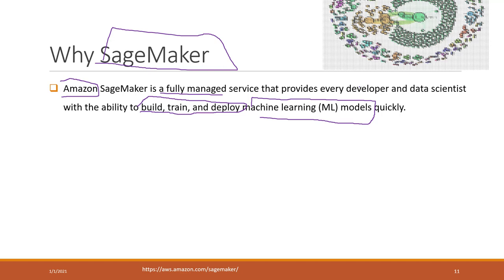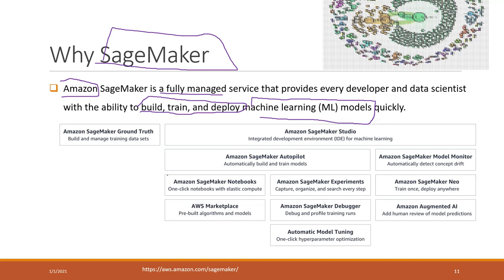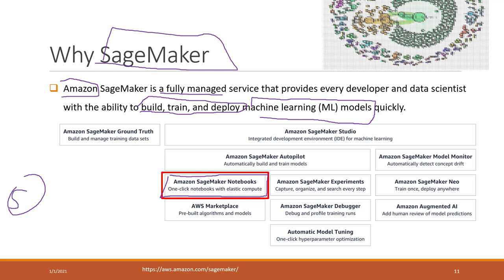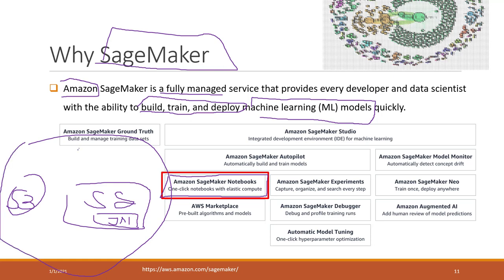SageMaker is designed for someone who uses Python to build, train, and deploy machine learning models. We are using SageMaker because SageMaker can host notebook. So we will use S3 to host our data and SageMaker to host our Jupyter Notebook — and they are all on AWS.